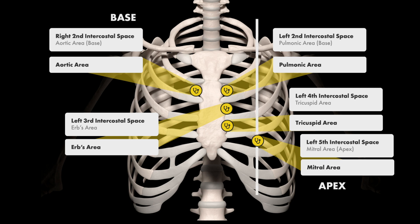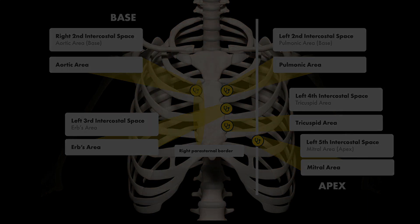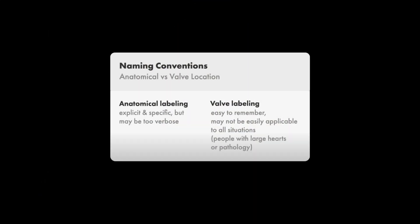This naming convention also gives you the benefit of expanding your labeling areas to other areas of the chest, such as the parasternal border, where you will sometimes hear heart sounds in people with cardiomyopathies or in certain congenital heart diseases. Additionally, some people may prefer describing location this way because some heart sounds may be loudest in other locations, and labeling areas such as aortic or tricuspid may not apply in specific circumstances, such as in people with enlarged hearts or in people with dextrocardia.